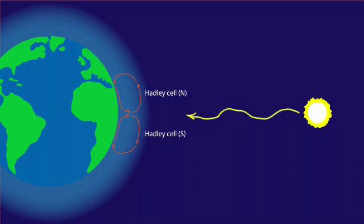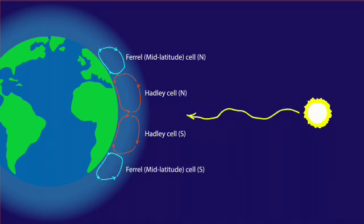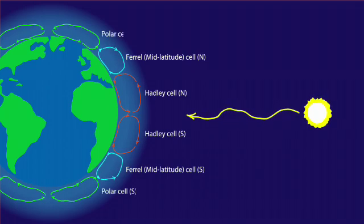Poleward from the Hadley cells are the Ferrell cells — north and south — also known as mid-latitude cells. Still further poleward, there are the polar cells, again north and south.